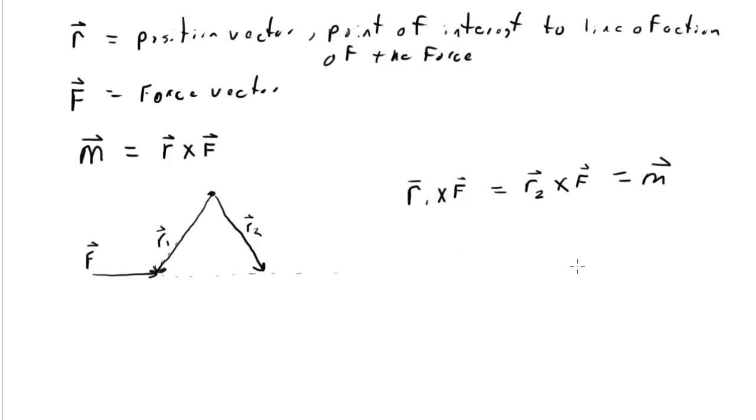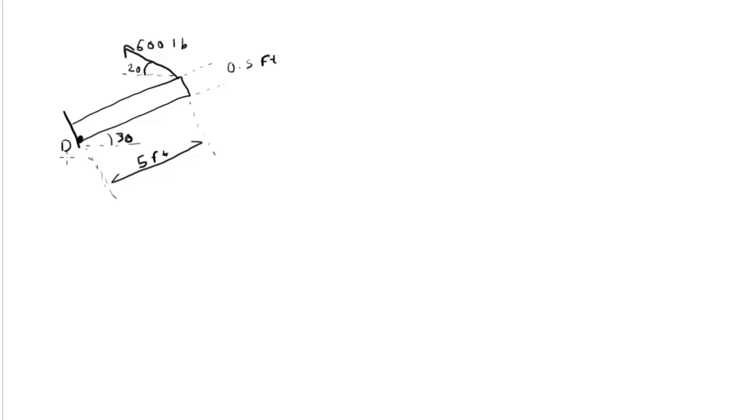So I'd like to work an example. So give me a second and let me set up the example. First we have a bar that's sticking out from a wall at an angle of 30 degrees from the horizontal. The bar is 5 feet long and has a distance or a height of 0.5 feet. At the far end of the bar, at the opposite corner from D where we're trying to determine the moment, we have a force applied. And that force points in this direction at an angle of 20 degrees from the horizontal.